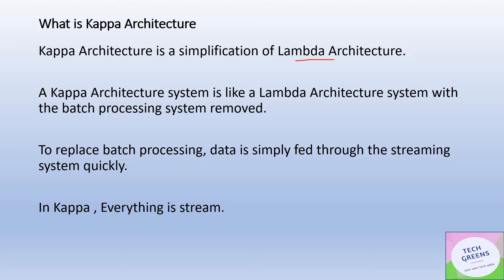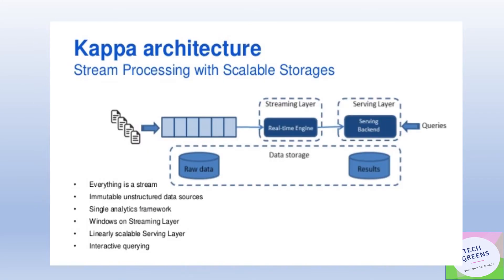Data is simply fed through the streaming system quickly. A rule of thumb or tagline for Kappa architecture is that everything is stream. Looking at the diagram for Kappa architecture, you can see there is a streaming layer, a serving layer, and underlying data storage to keep the incremental views and compute views.